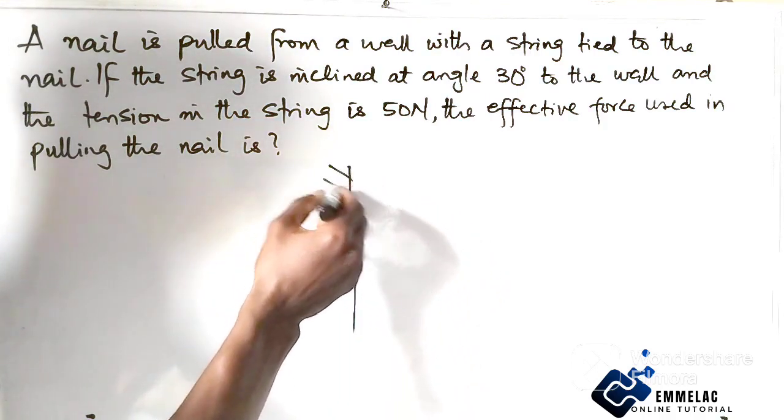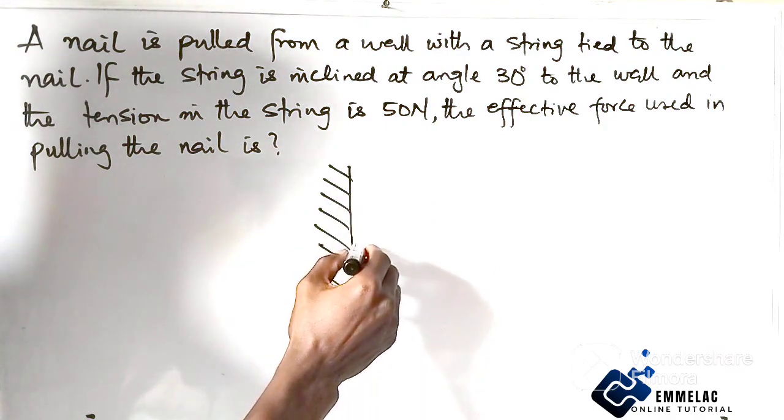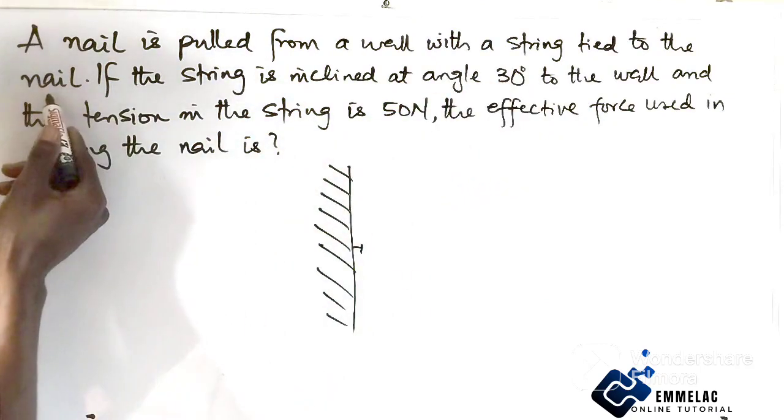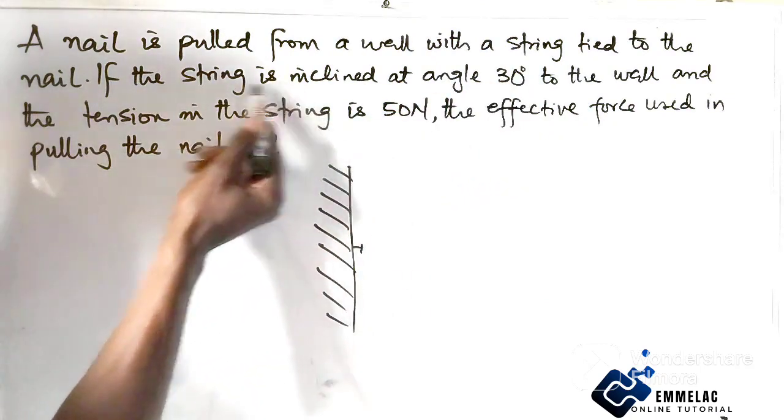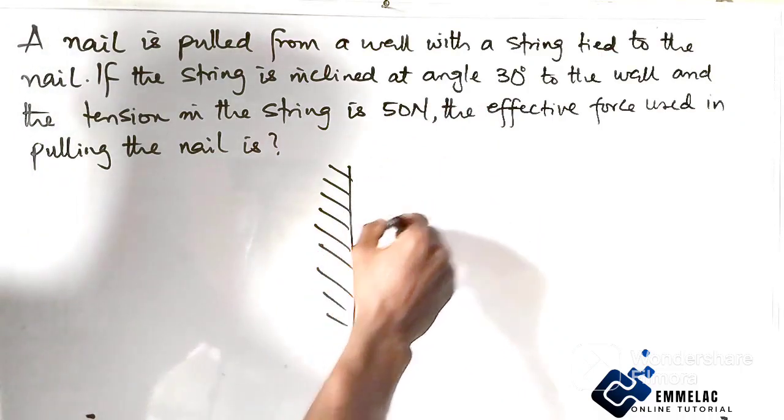Alright, so here is the wall. Here is the nail. The string itself is tied to the nail. This string is inclined at angle 30 degrees, so we'll have it like this.